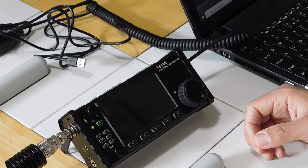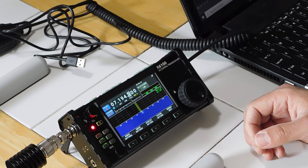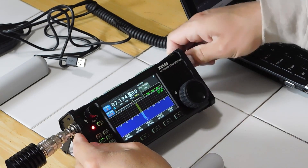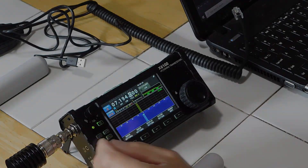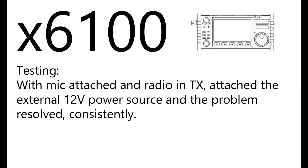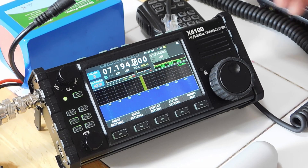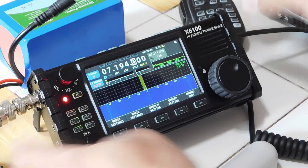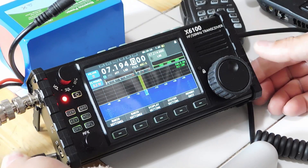Watching this thing power up — I haven't removed the mic — and you'll see, there it is. It's in Transmit again. Now, it didn't seem to matter which frequency; it would just go into Transmit. So I decided to try this: with the mic attached to the radio and it already in Transmit, I added an external power source to the equation — and watch this. It seems to get rid of the problem.